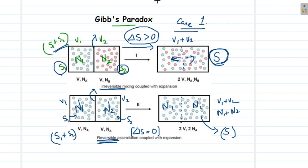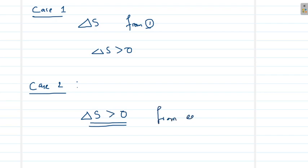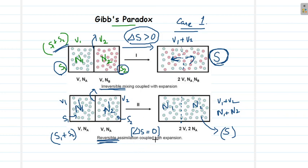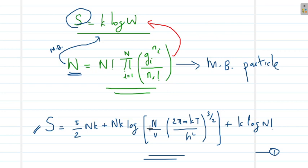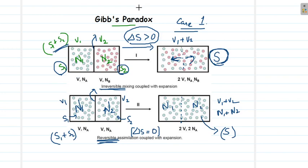But in Case 2, which corresponds to identical particles in both boxes, if we use the same equation and calculate delta S, it is again found to be greater than zero. But that should not be the case — we know delta S should be equal to zero here. Using the Maxwell-Boltzmann statistics and Boltzmann's relation, we get delta S greater than zero where it should have been delta S equal to zero. In this situation the classical prediction does not match the actual result. This is the Gibbs paradox.